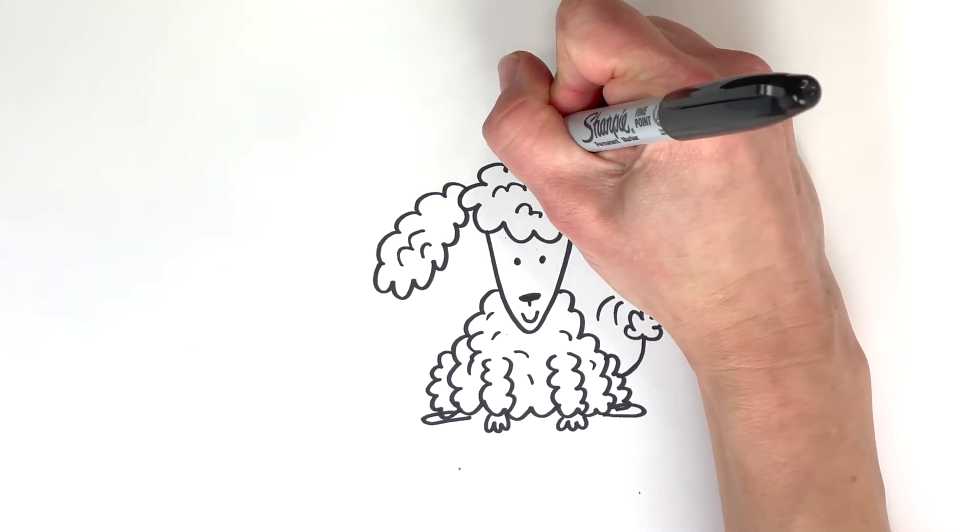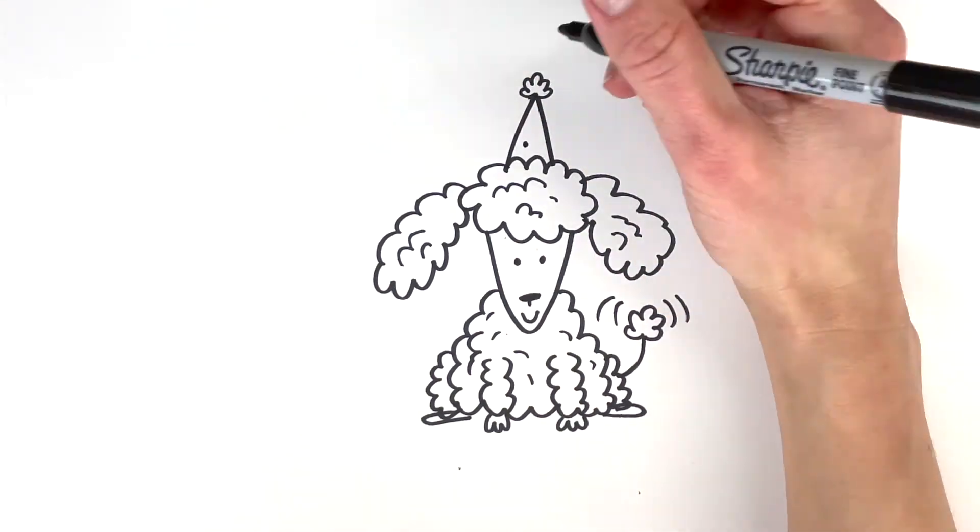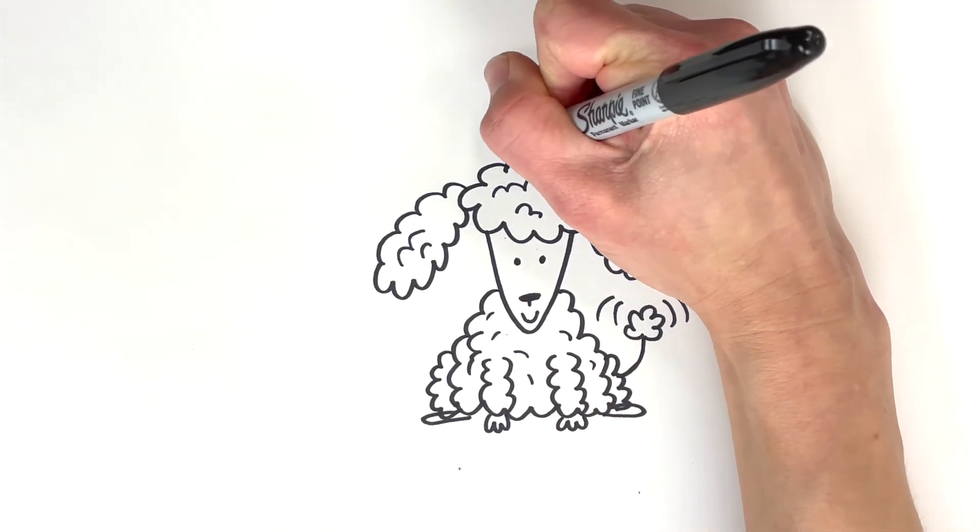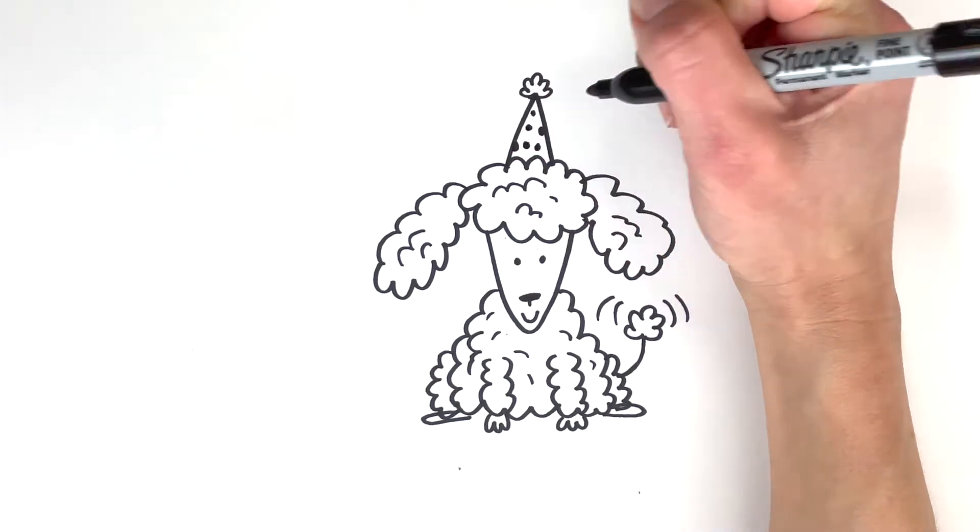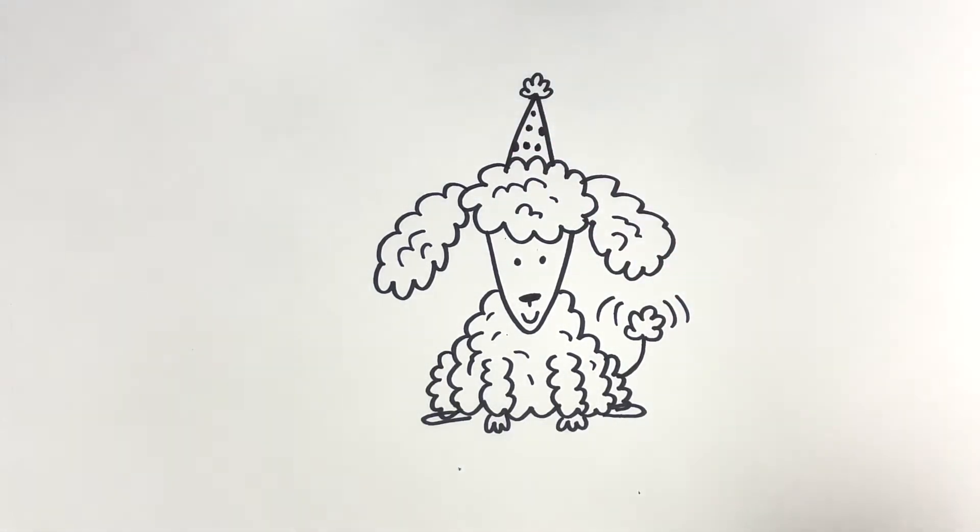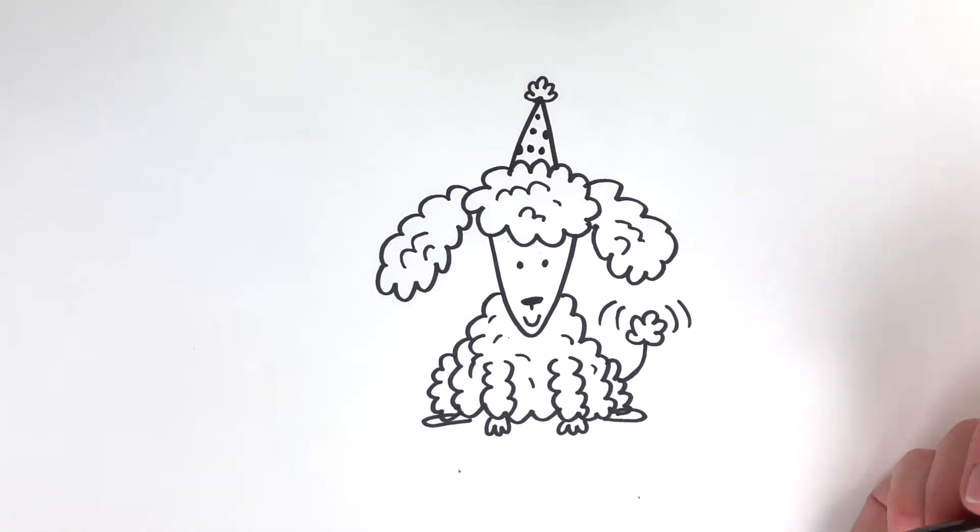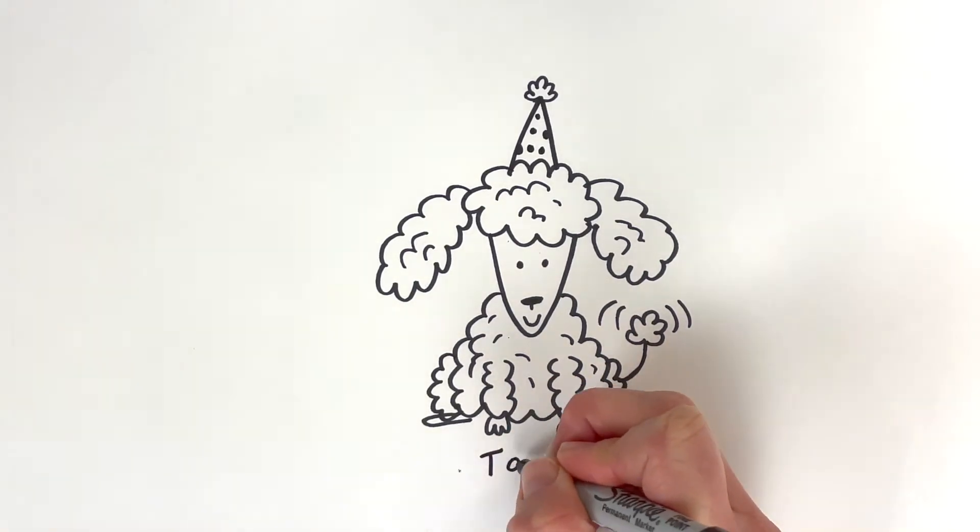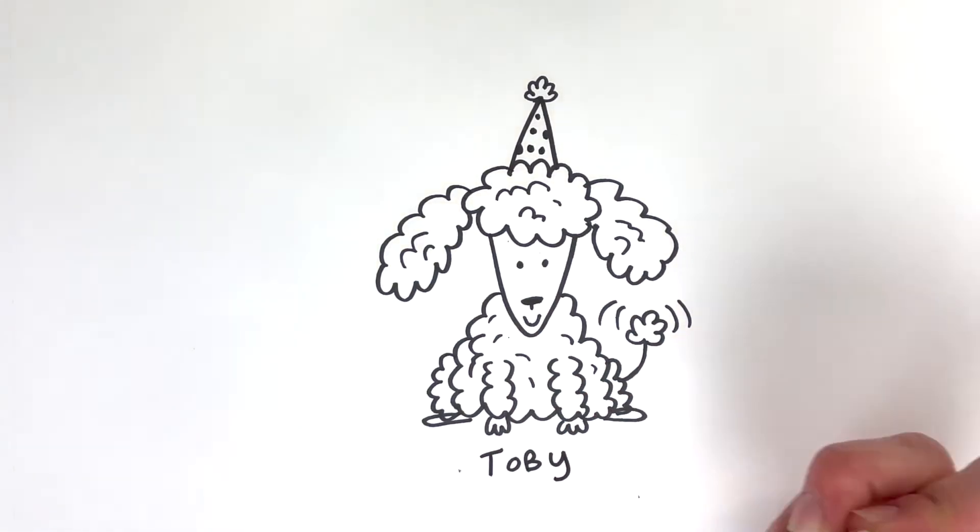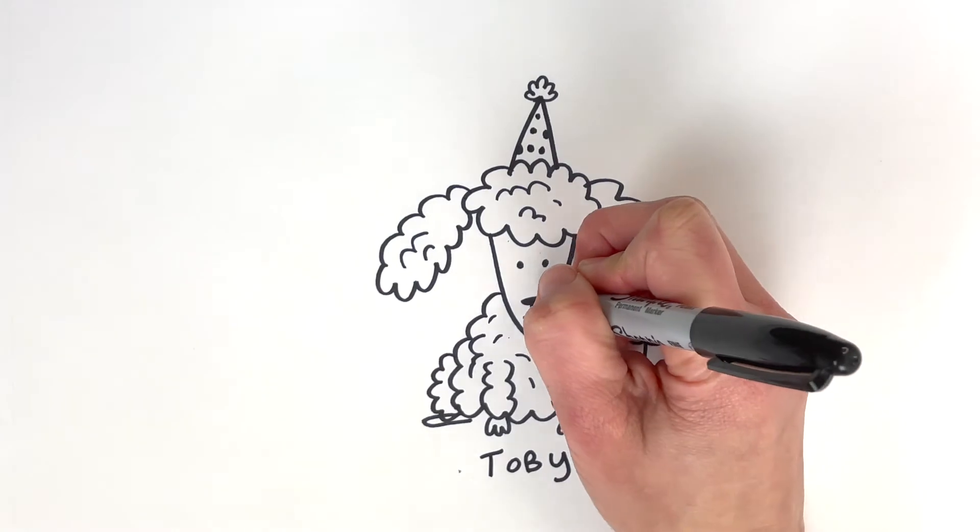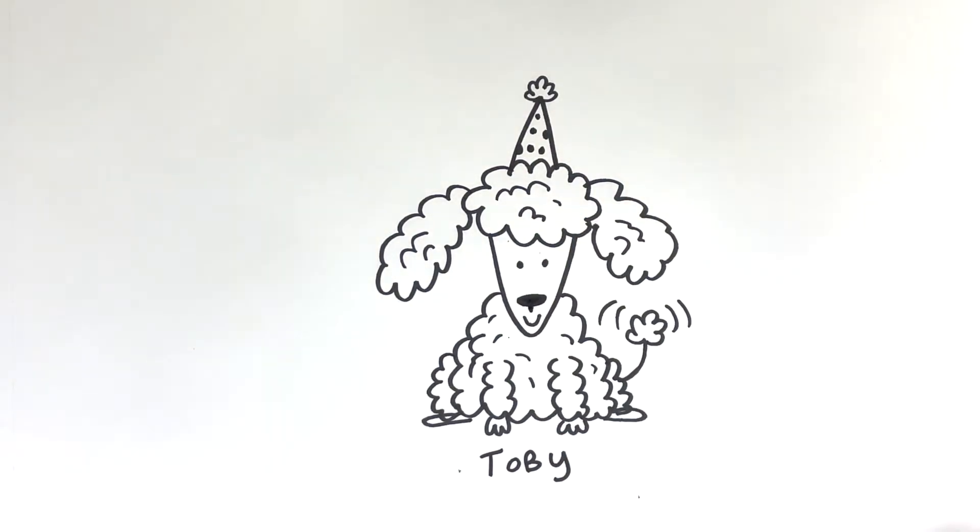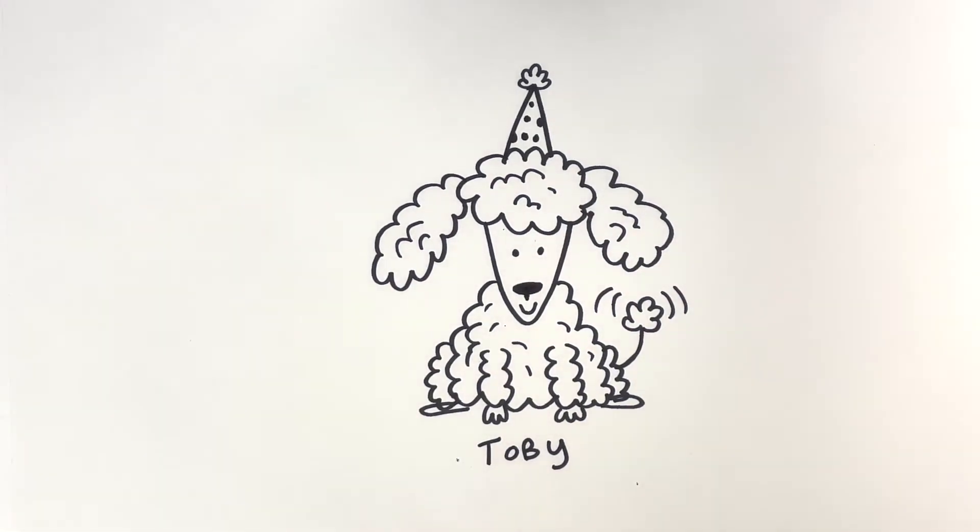And instead of stripes, I think I will do a polka dot pattern on my party hat. Oh, cute. Okay. This pup, I think will be named Toby. Toby the poodle. I think the nose is a little bigger. Oh, so cute. Great job, you guys.